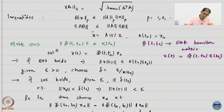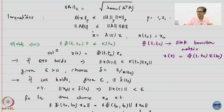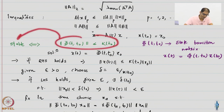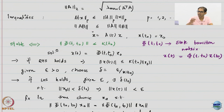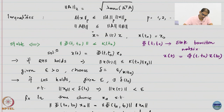Let us start with assuming that this is true. If this is true, we want to prove that the system is stable in the epsilon-delta sense that we just defined. If the right-hand side holds, I know that the norm of x is less than or equal to the norm of this expression.